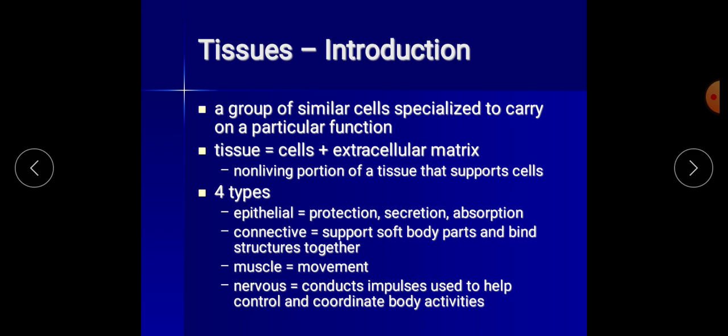There are basically four types of tissues. First is epithelial tissue, whose normal function is protection, secretion, and absorption. Second is connective tissue, which has a major function of supporting soft body parts — for example heart, liver, or lungs — and binding structures together like the peritoneum. Third is muscle tissue, whose major function is movement. Fourth is nervous tissue, which conducts impulses used to help control and coordinate body activities.